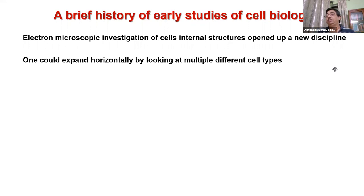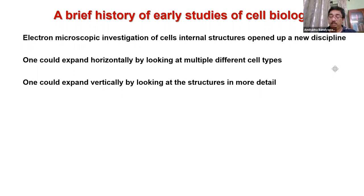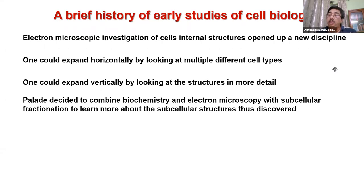Once electron microscopic investigation of cellular structure was possible, you had two options: expand horizontally by looking at different kinds of cells to identify common features, or get further detail for a particular intracellular organism. But you could not ask functional questions — and that's where Palade's genius came. Palade decided to combine biochemistry with electron microscopy and subcellular fractionation, with ingenious use of radioactivity to ask functional questions.